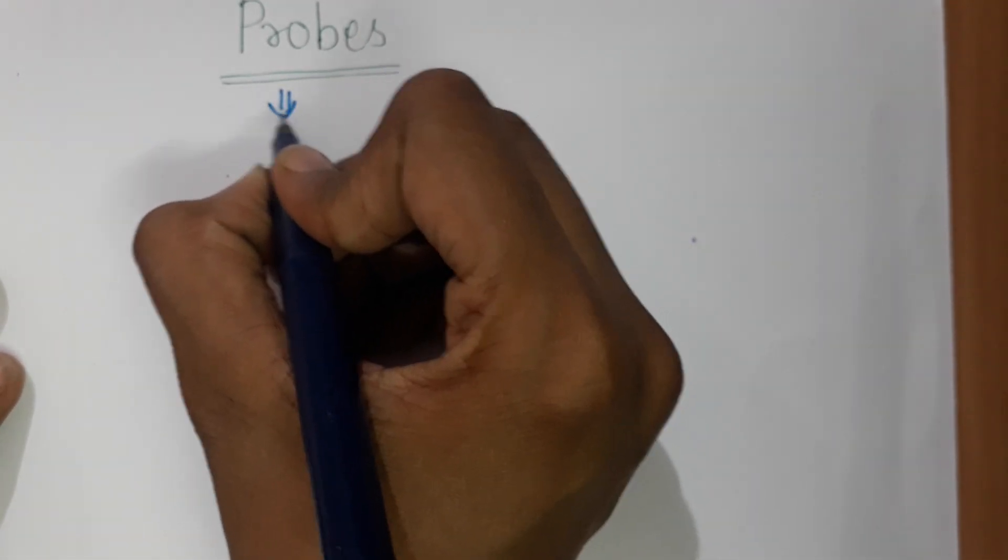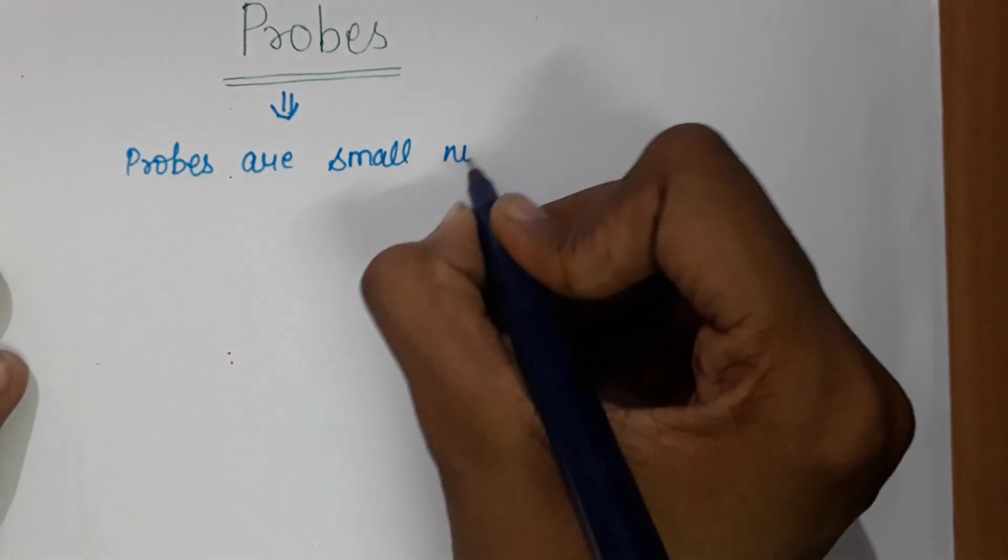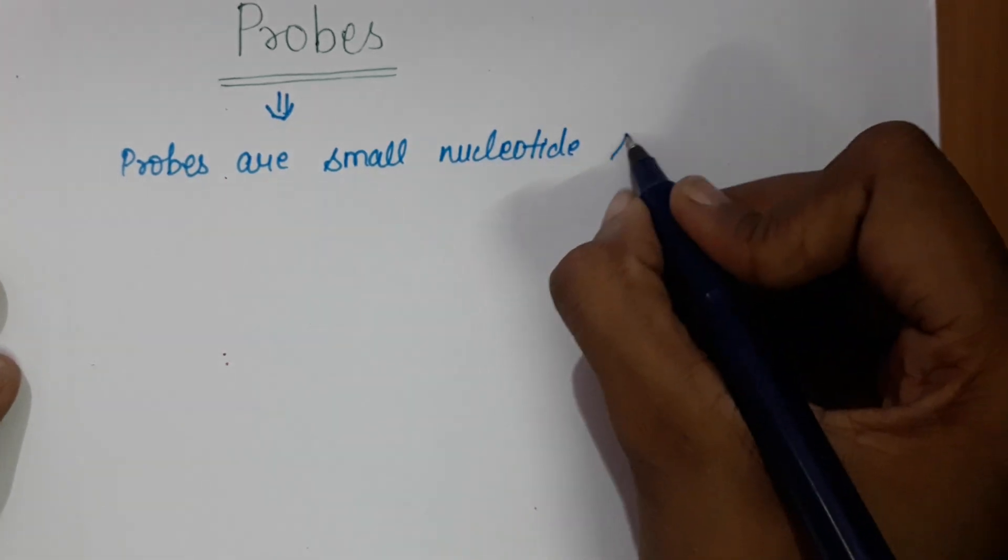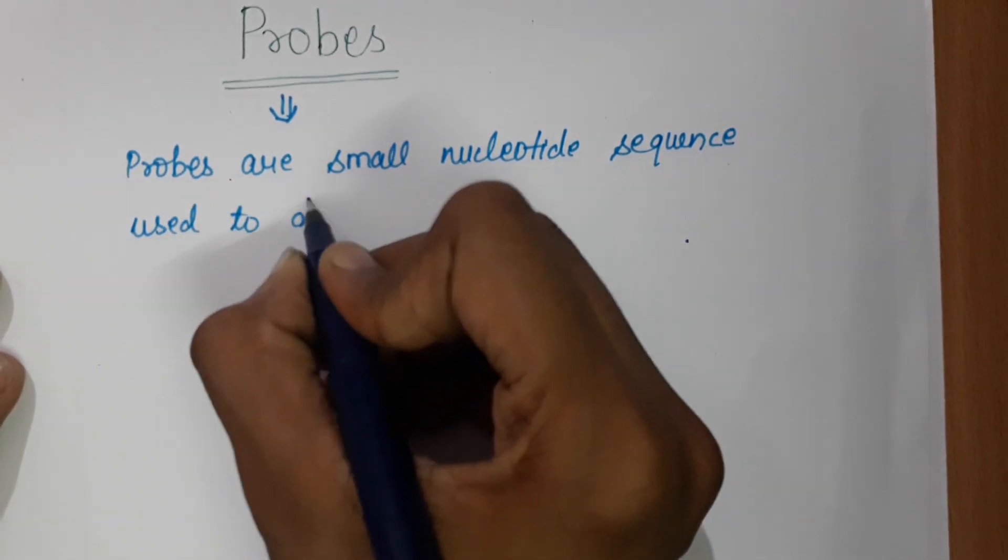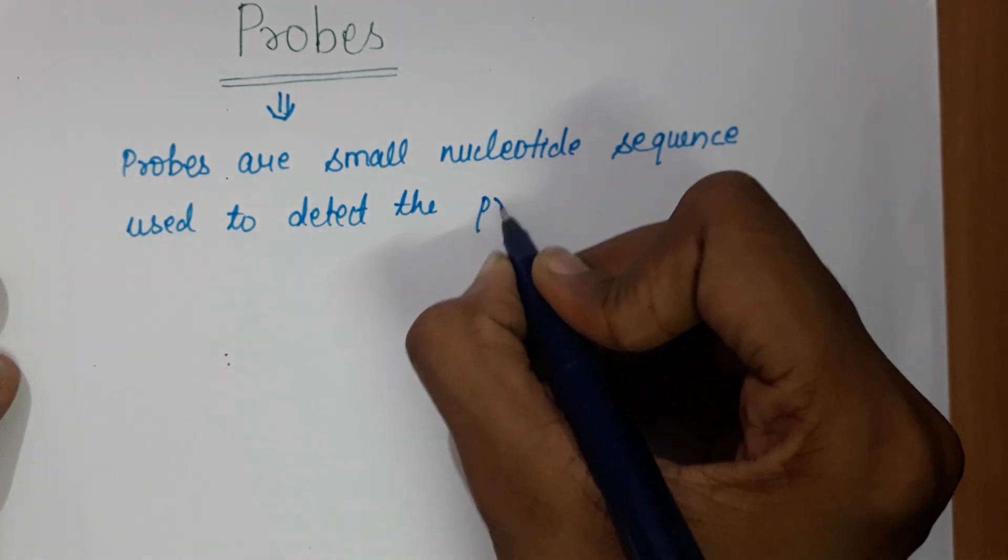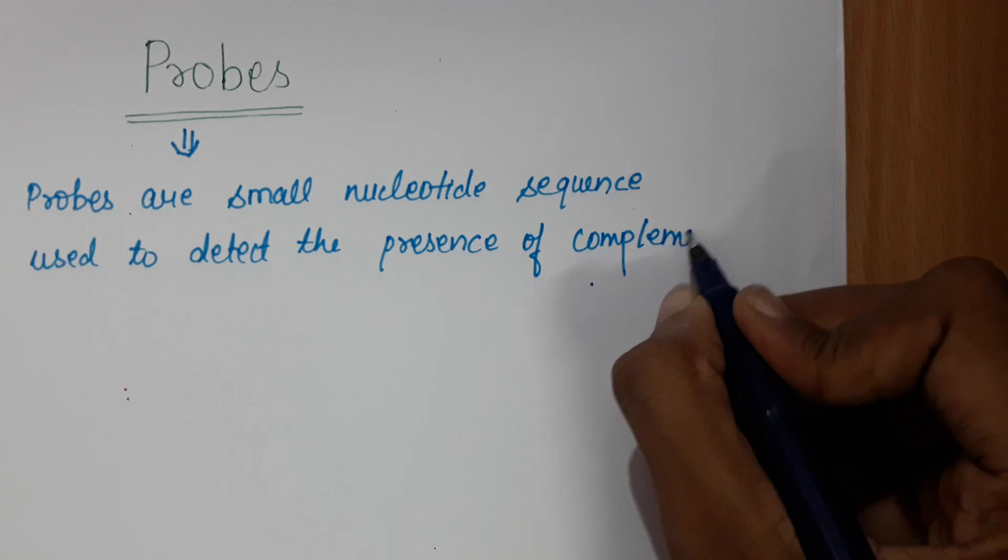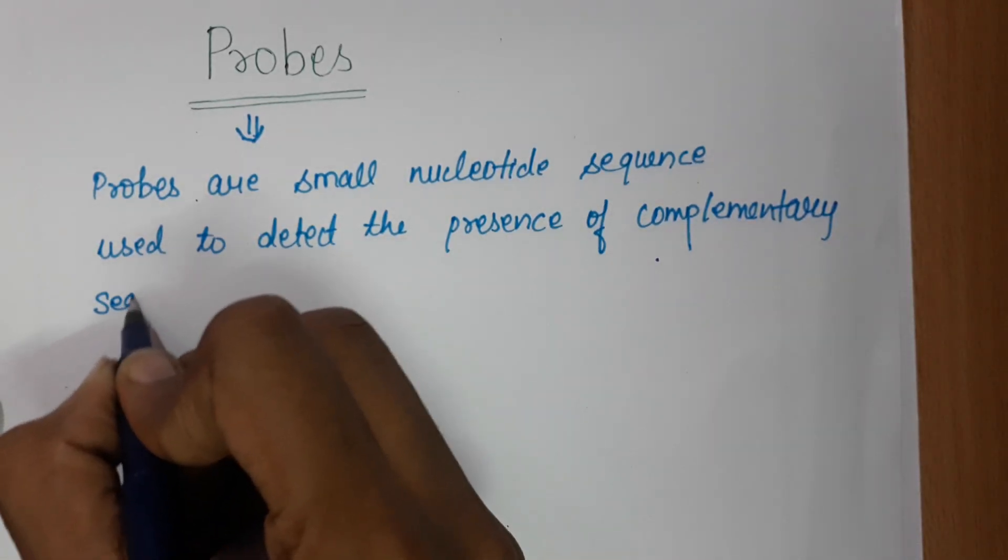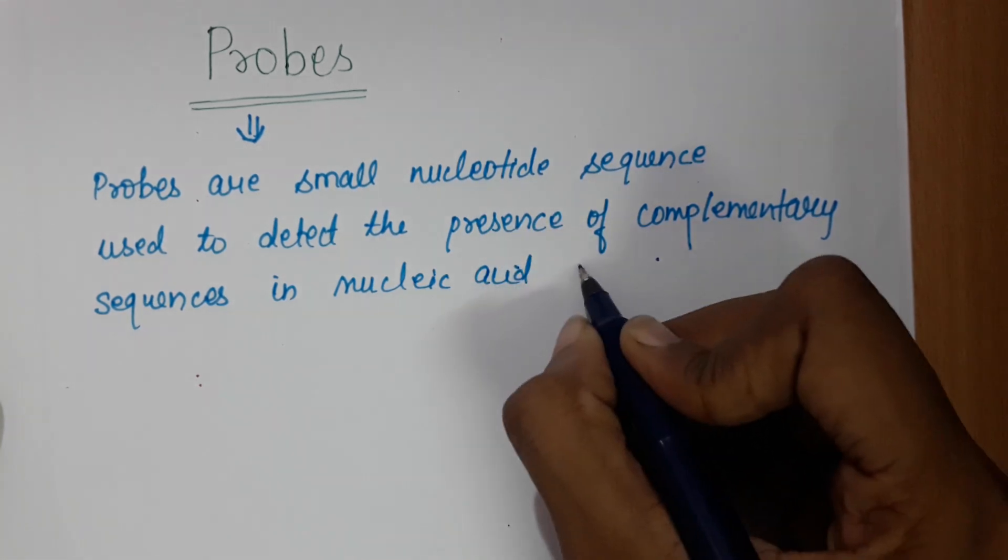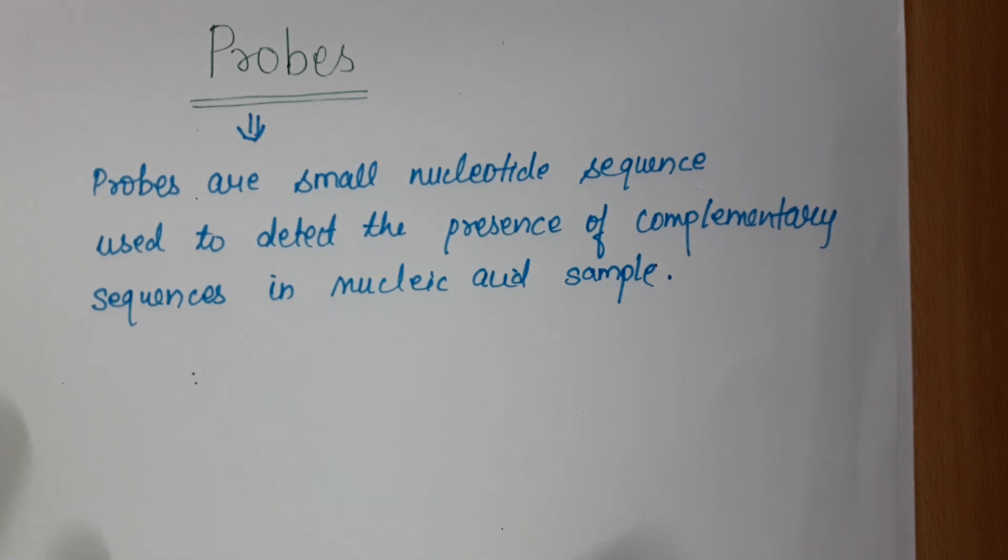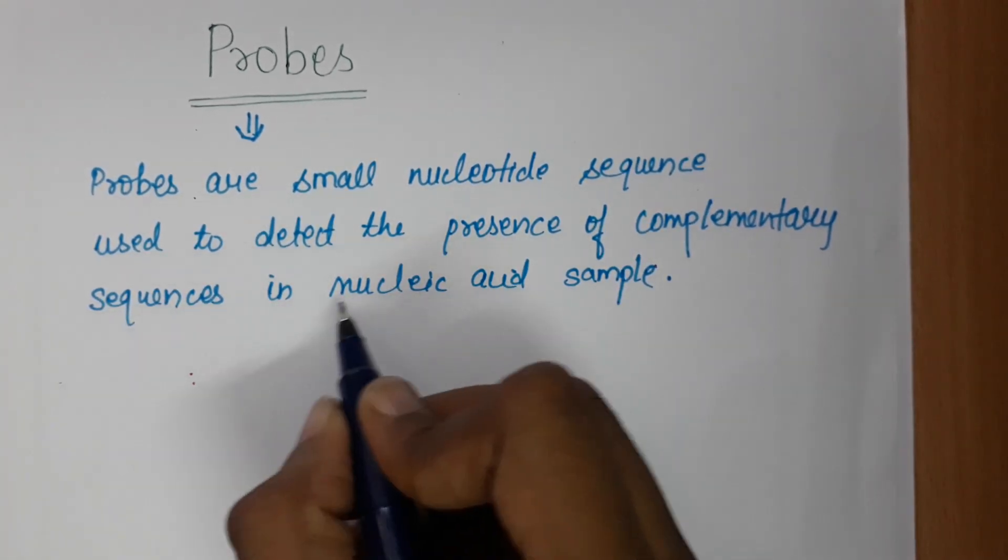Probes are small nucleotide sequences used to detect the presence of complementary sequences in nucleic acid samples.